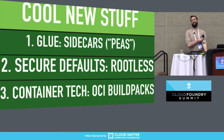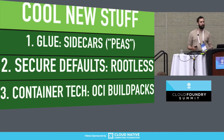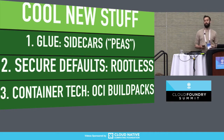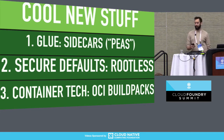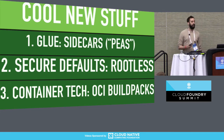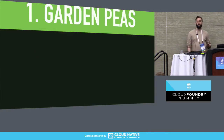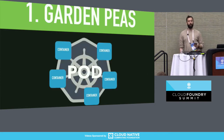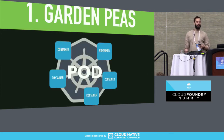So that's Garden: it's glue, it's secure defaults, exploiting container tech. Now, in an effort to prove I'm not lying, cool new stuff for each of the bullet points in turn. We've got glue, which is the new sidecars work; secure defaults, which is the rootless work; and container tech, which is OCI buildpacks. Let's go. Glue is all about Garden peas.